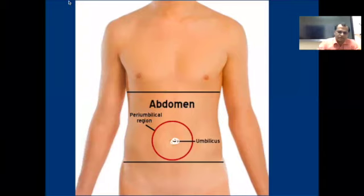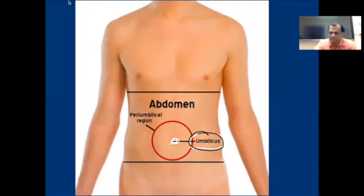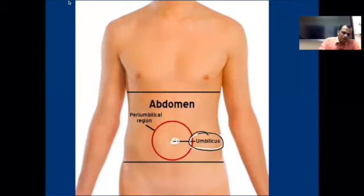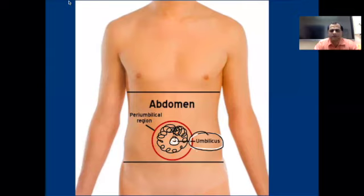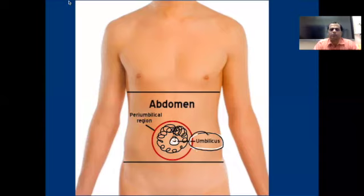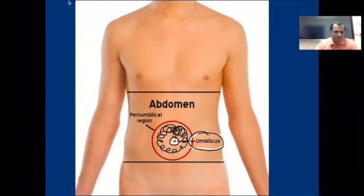The naval region is called umbilicus. Umbilicus means naval region. The area around the naval is called the peri-umbilical region. This is a very simple thing — umbilical and the peri-umbilical region.